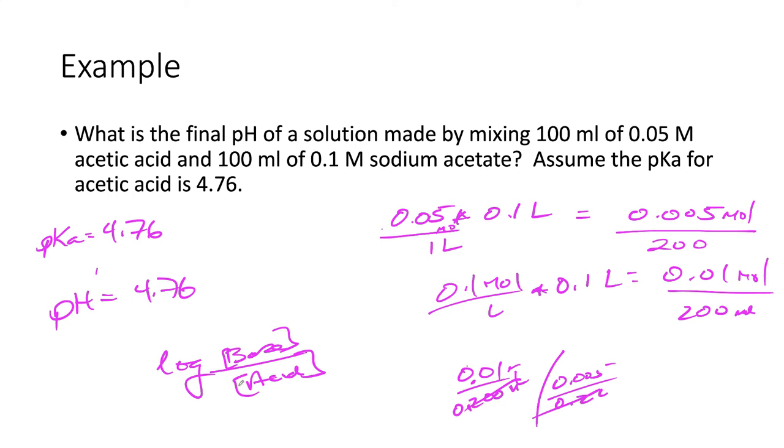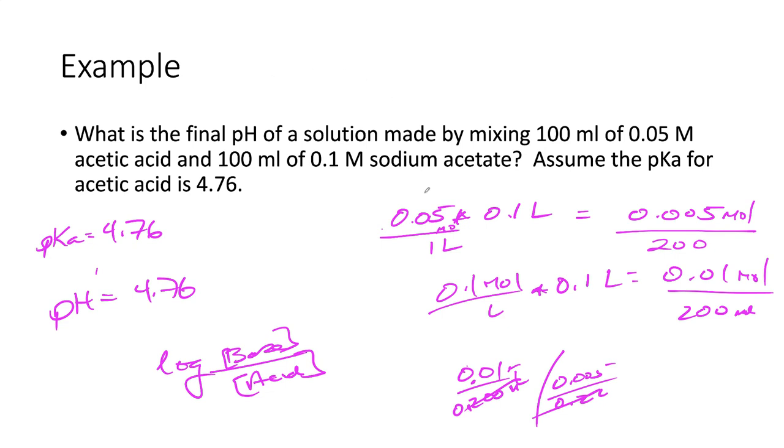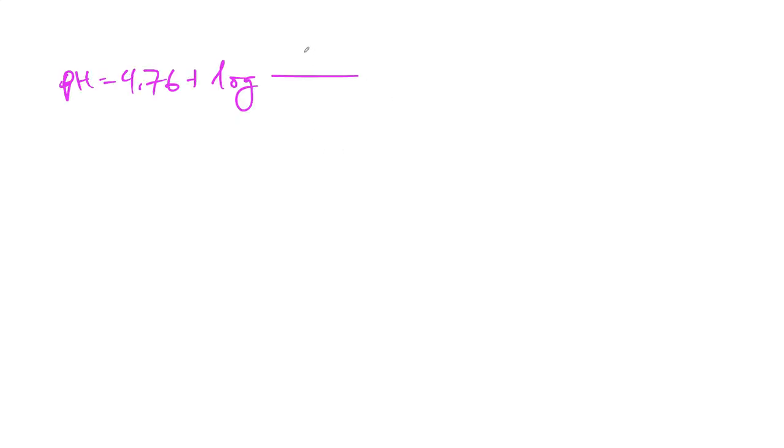Let's go 4.76 pH. It's equal to 4.76 plus the logarithm of the base over acid. Coming back up here, the base is 0.01 and this is 0.005 for the acid. So I'm expecting the pH goes up a little bit on this.